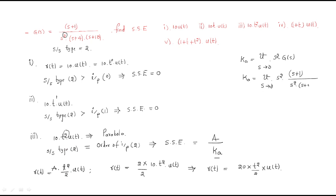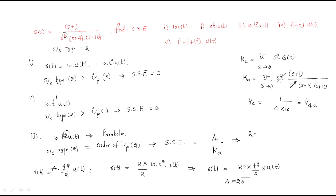After cancellation, applying the limit as s→0 gives Ka = 10·(0+1) / [(0+4)(0+10)] = 10 / 40 = 1/40. Therefore, steady-state error = a / Ka = 20 / (1/40) = 20 × 40 = 800.